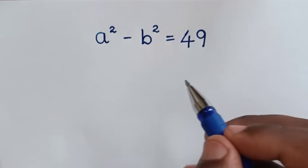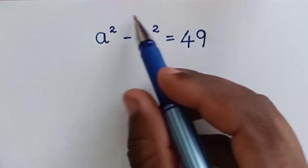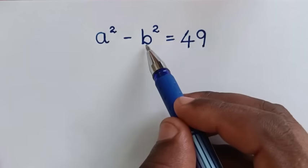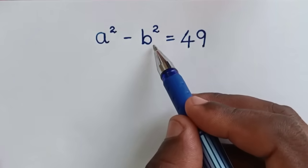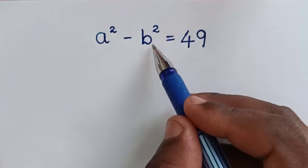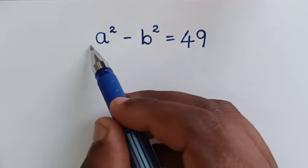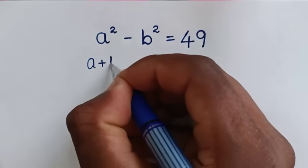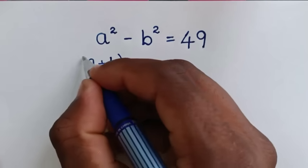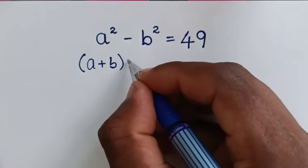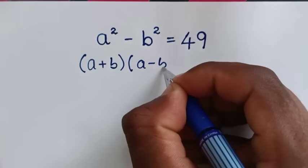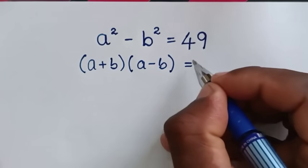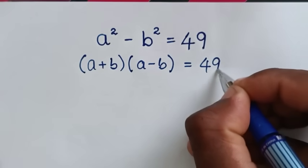In the first step, the left side — a squared minus b squared — is in the form of a perfect square. So this is the same as a plus b times a minus b, which is equal to 49.